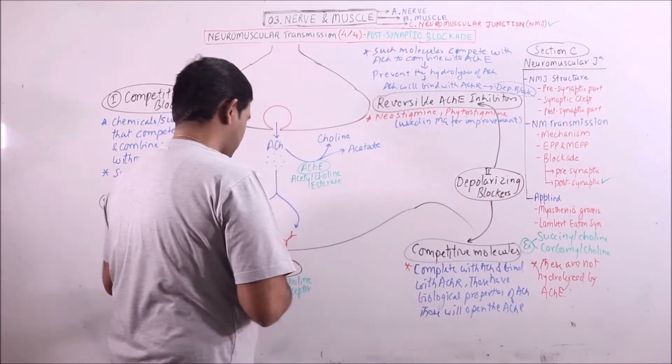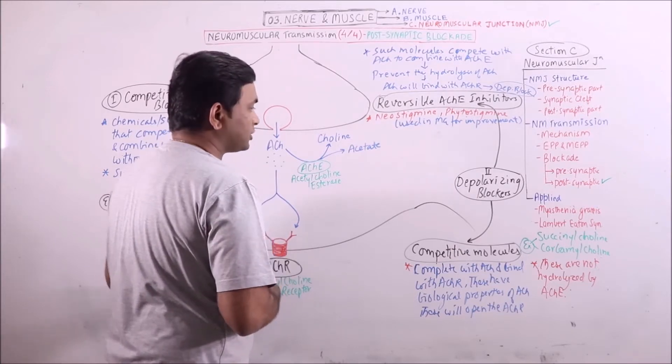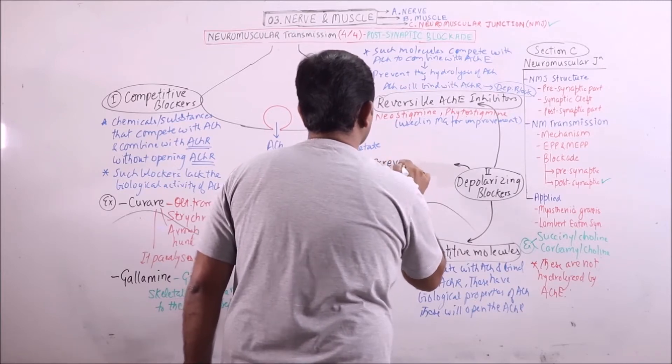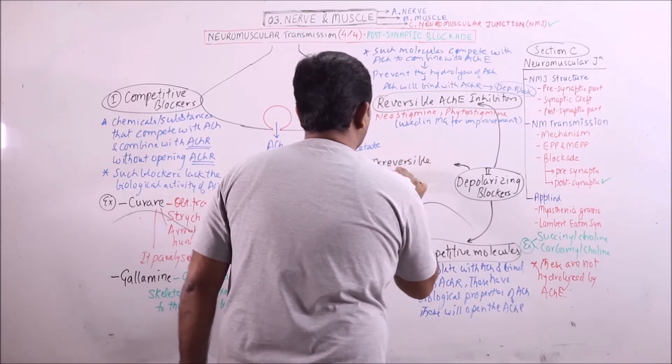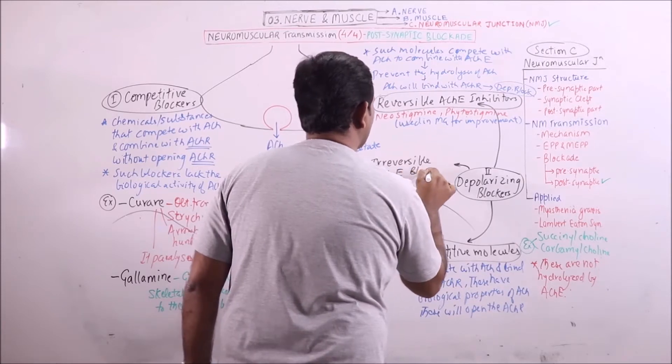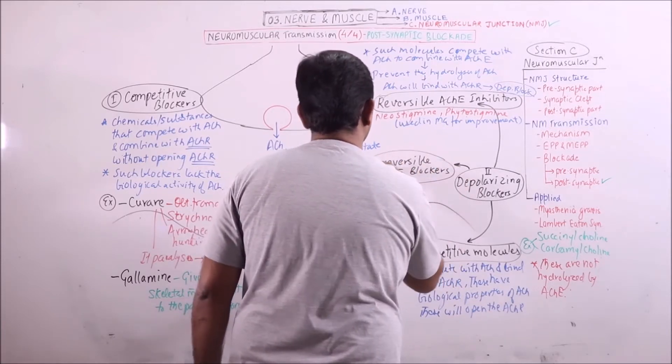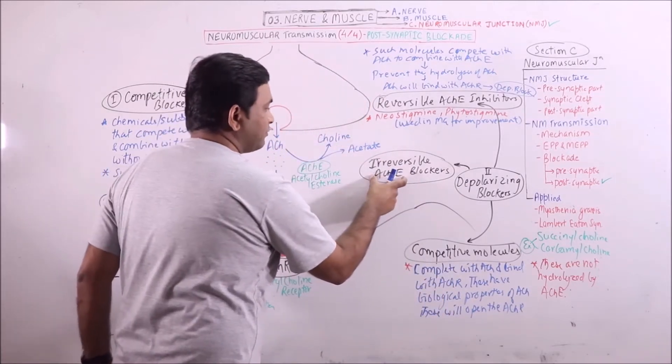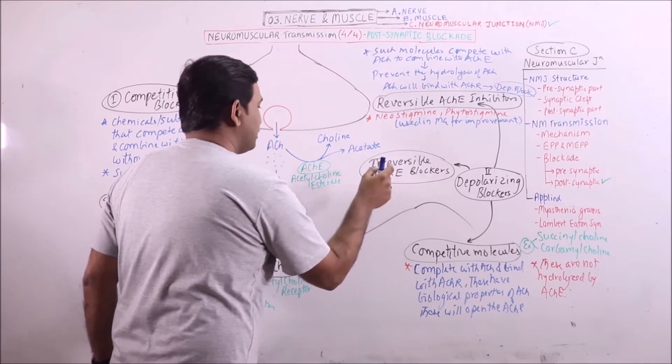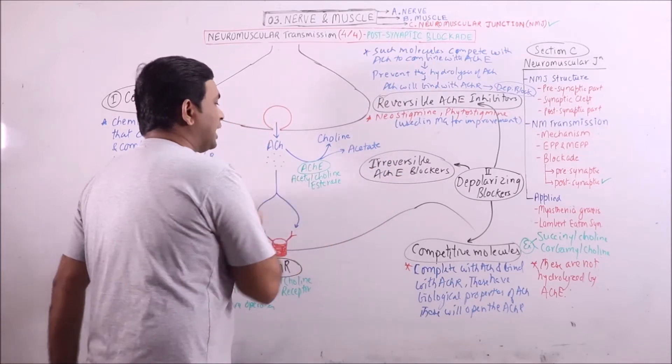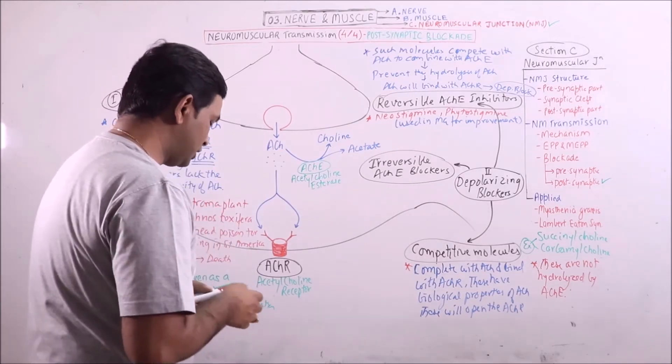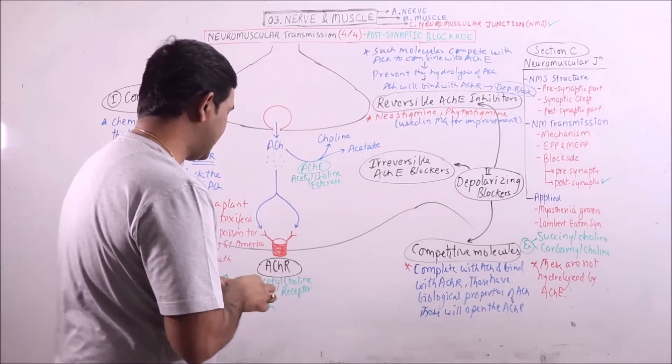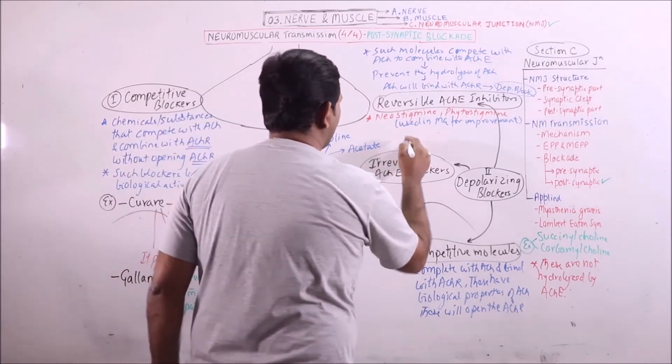Curare can also be given to reverse the conditions. Another category is irreversible acetylcholine esterase blockers. Such blockers will permanently bind with ACHR and make the ACHR unavailable for hydrolysis. This condition is irreversible and may paralyze and cause death if respiratory muscles are involved.